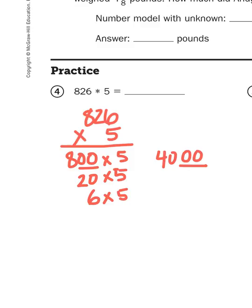20 times 5, well, that's going to give me 100. And then 6 times 5 is 30, so 4,000 plus 100 plus 30 is going to give me 4,130.